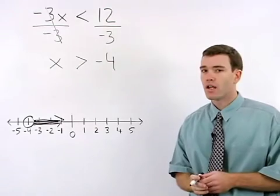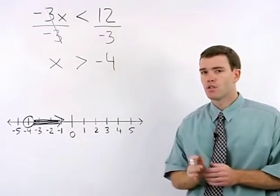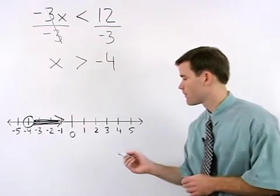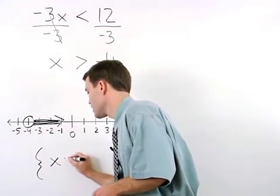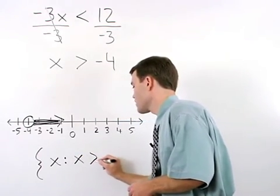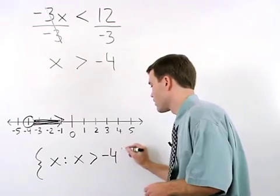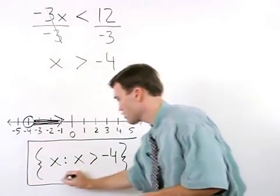Finally, we put our answer in what is called set notation, which is written in the following way. The set of all x's such that x is greater than negative 4. And this is our final answer.